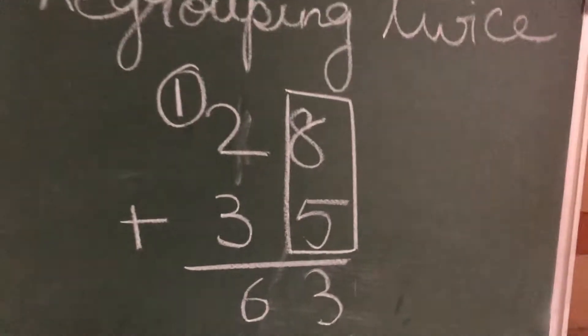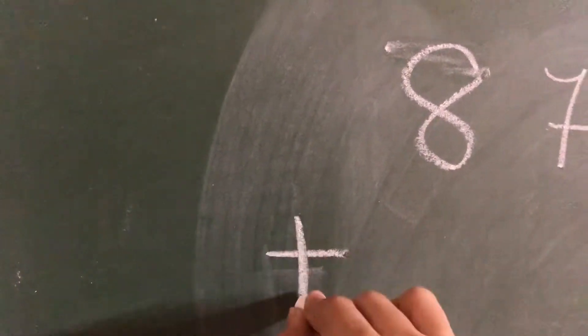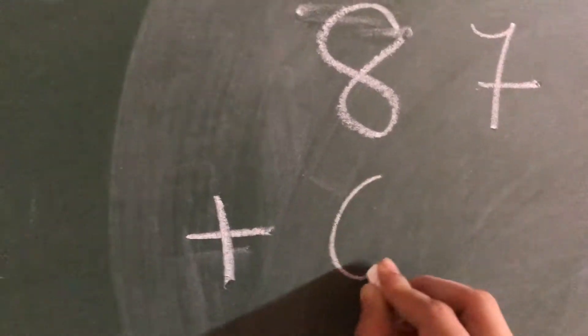So this is, we have only done regrouping in one place. Only one time we have done regrouping. Now here today we will be doing regrouping twice. So how to do regrouping twice? If I have a number, because now this is addition of bigger numbers, if I am taking bigger numbers such as 87 plus 65.